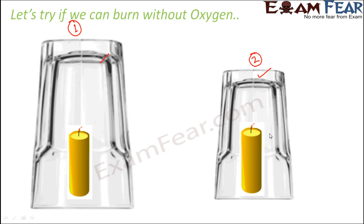Why did the candle go off — why is it not burning anymore? When we cover it with the glass, the only air available to the candle is the air present inside the glass. The oxygen in that air is continuously used by the candle to burn. Eventually the oxygen is completely exhausted because you have closed it within the glass, giving it a limited supply of oxygen — and when that supply runs out, the candle goes off.